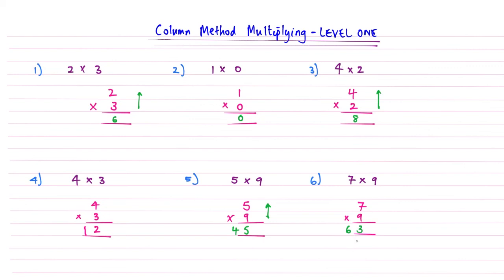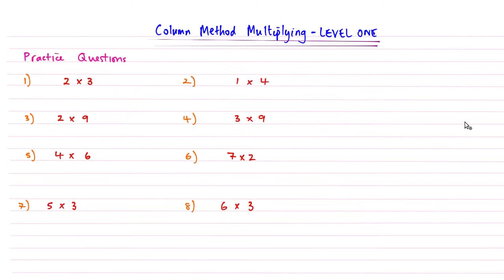That's how you do level 1 for the column method multiplication. Getting used to just writing them as numbers on top of one another into columns there. Hopefully that's made a bit of sense. These are your practice questions. Have a go at those 8. Thanks for watching. And I'll see you in level 2.